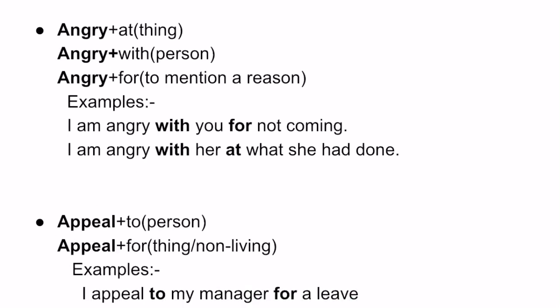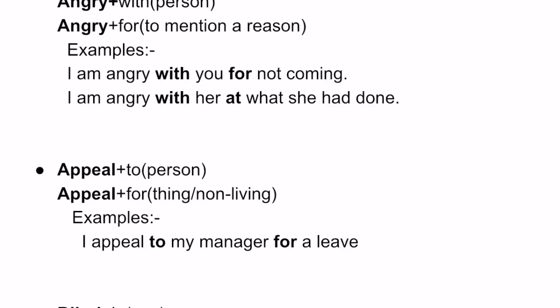Let us see the next word: 'appeal.' We will be seeing two different kinds of prepositions coming with the word 'appeal': 'appeal to' and 'appeal for.' We use 'to' to refer to a person, and 'for' for a non-living thing. For example, 'I appeal to my manager for a leave.' Why 'to my manager'? Because manager is a person. Why 'for a leave'? Because leave is a thing — I am talking about a non-living thing, so 'for.'